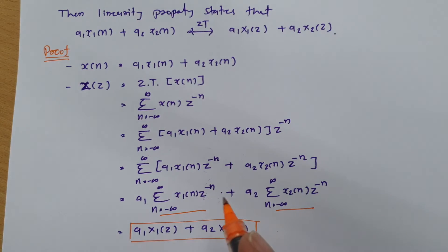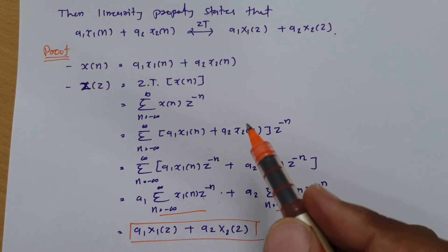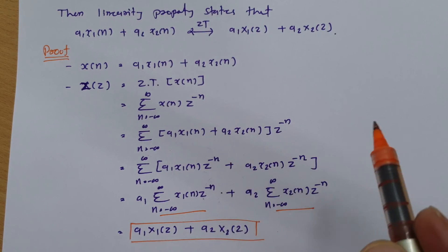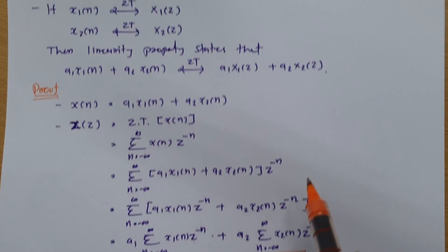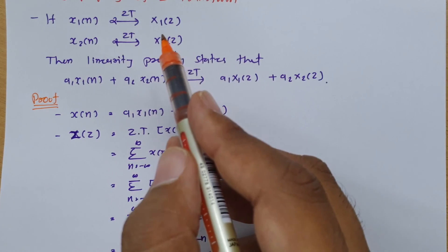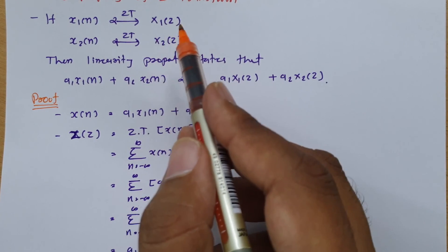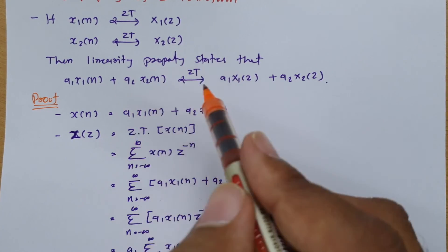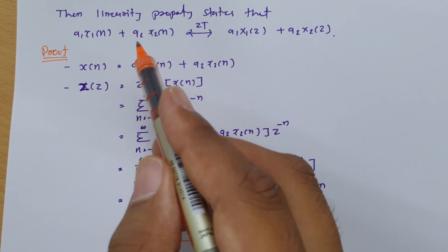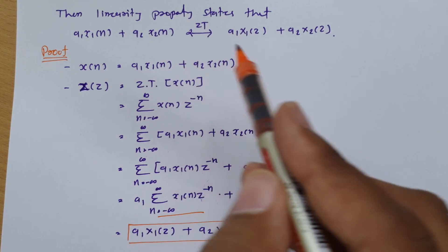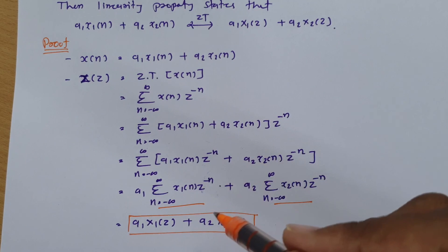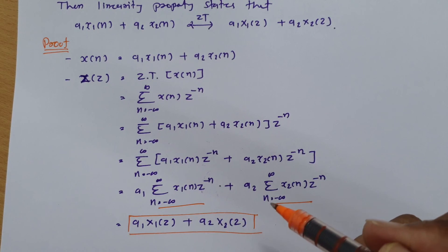To summarize, the linearity property states: if you have two signals x1(n) and x2(n) whose Z-transforms are X1(z) and X2(z) respectively, then the Z-transform of a1·x1(n) + a2·x2(n) is a1·X1(z) + a2·X2(z). This is how we can prove the linearity property.